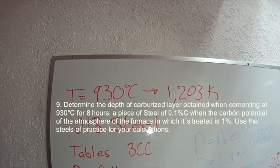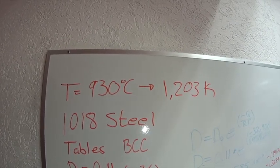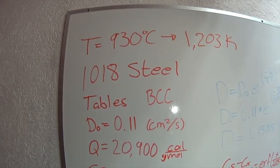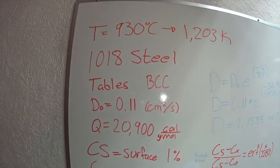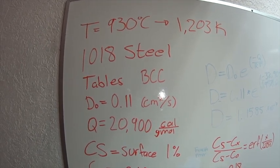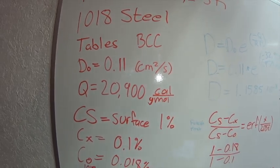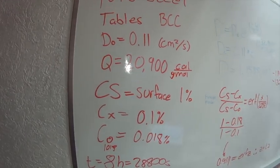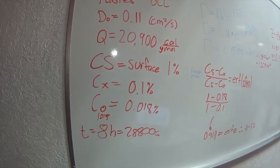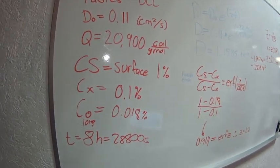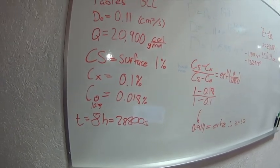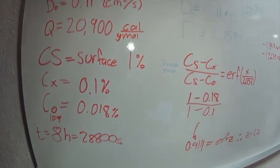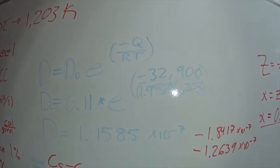To solve the problem, we have a temperature of 930 degrees Celsius, which translates to 1203 Kelvin, using steel 1018. From our tables we find it is a BCC steel, with a D₀ of 0.11 cm²/s and a Q of 20,900. The surface carbon concentration CS is 1% by the problem, CX is 0.1%, and the initial carbon concentration C₀ is 0.018% for 1018 steel. The time is 8 hours, which translates to 28,800 seconds.